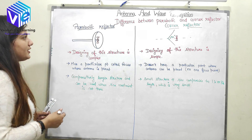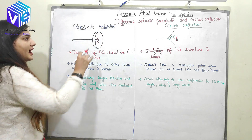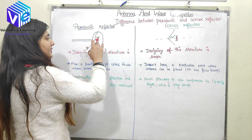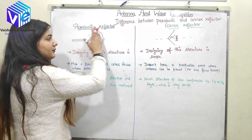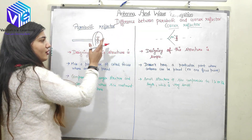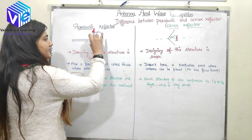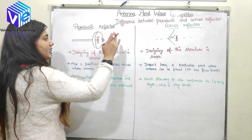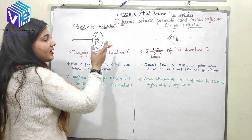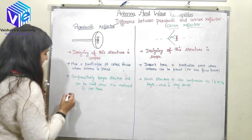The last point about the parabolic reflector is that if it is a transmitting antenna, it will produce directional waves after reflecting from its surface. And if it is a receiving antenna, it requires directional waves to receive the signal.